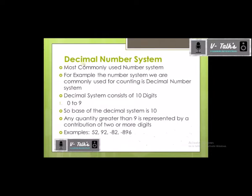The decimal number system is the most commonly used number system. It's what we use now for counting, taking attendance, roll numbers — all those numbers we use in everyday life are from the decimal number system. The number system we commonly use for counting is the decimal number system.